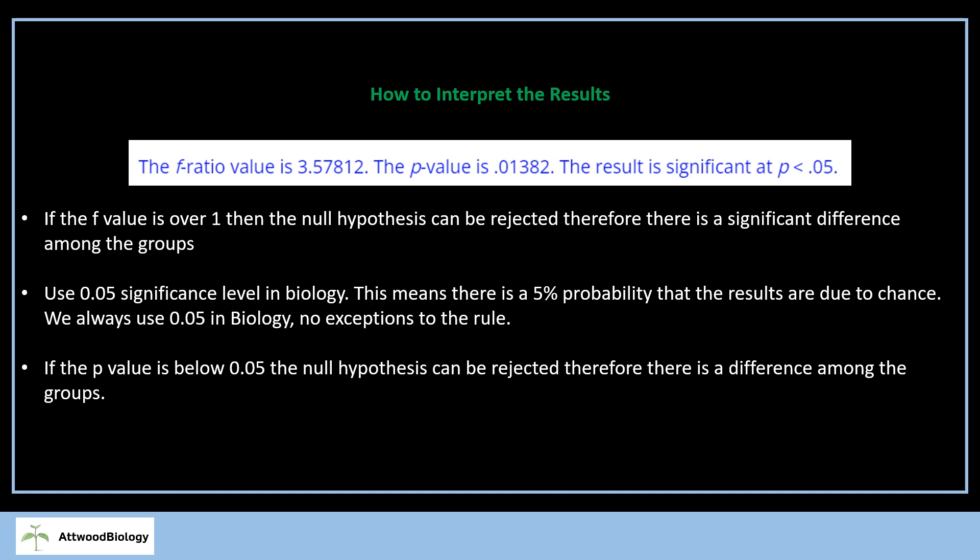How we're going to interpret this is that if the F value is over 1, then we're going to reject the null hypothesis. Therefore, there is a significant difference among the groups. If your F value is below 1, then you can accept the null hypothesis, so there is no significant difference among the groups.